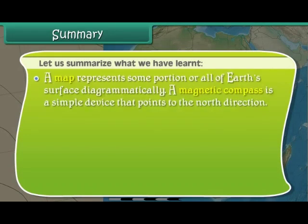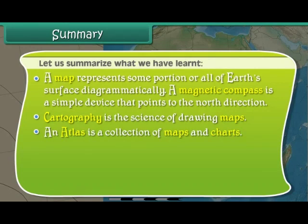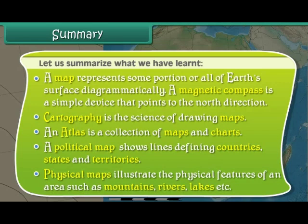A map represents some portion or all of the Earth's surface diagrammatically. A magnetic compass is a simple device that points to the north direction. Cartography is the science of drawing maps. An atlas is a collection of maps and charts. A political map shows lines defining countries, states and territories. Physical maps illustrate the physical features of an area such as mountains, rivers, lakes, etc.